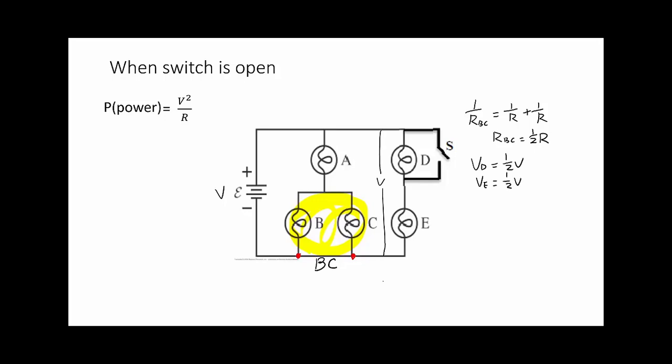And R A is larger than R BC. So with the same I through them, R A times I equals VA, and R BC times I equals V BC. R A is R and R BC is half R. So 2 times VA equals V BC. And VA plus V BC equals V. So VA is 2 thirds of V and V BC is 1 third of V.